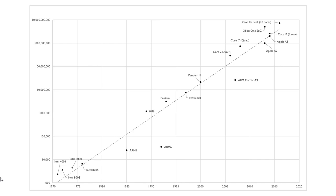This diagram shows the number of transistors in various processes over the years. Note that this is a logarithmic scale, so each square represents a factor of 10 difference. In the 1970s, various Intel processors had fewer than 10,000 transistors. Fifty years later, we're approaching 10 billion transistors — a massively exponential increase. Top-of-the-range processors have well over 1 billion transistors, and over the next few years they'll start approaching 10 billion.